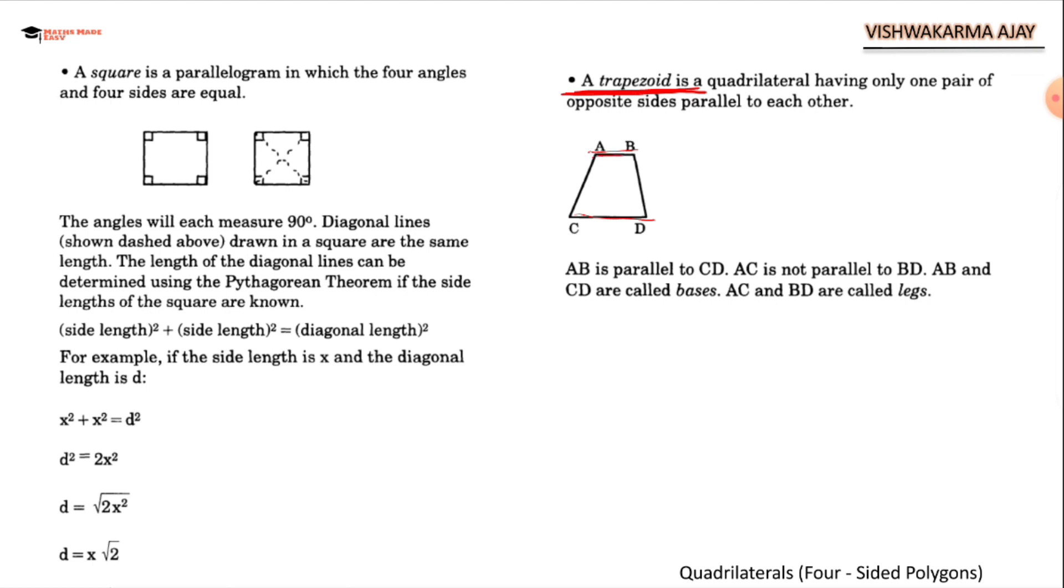The parallel lines are always called bases. This will help us when we will be writing the formula for trapezoid. Just remember, AC and BD cannot be bases. Whenever we will refer to base, we are going to refer to the parallel lines.